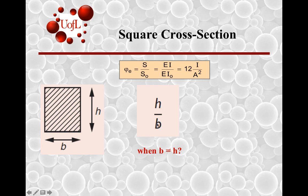What happens when B equals H? This drops to 1, which is basically the reference shape efficiency factor. So a square cross-section has a shape efficiency factor of 1, and everything else changes according to the deviation from the square cross-section.